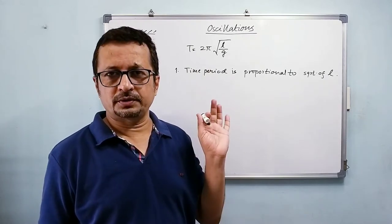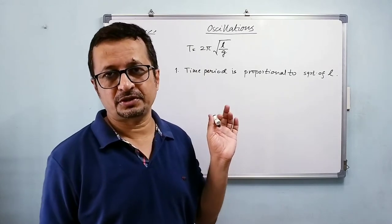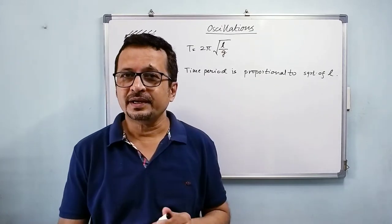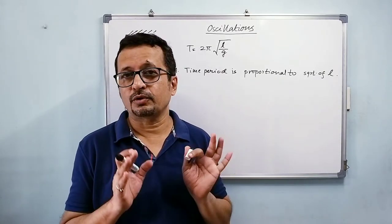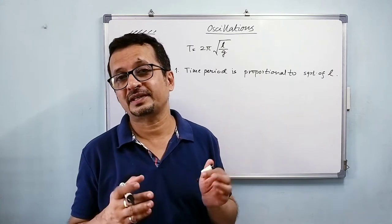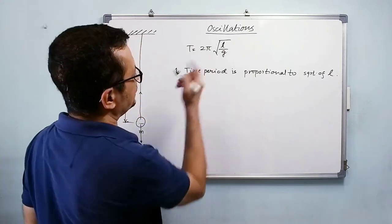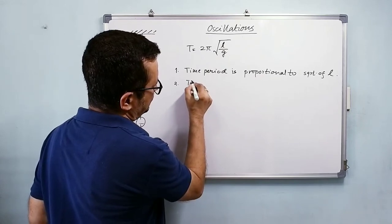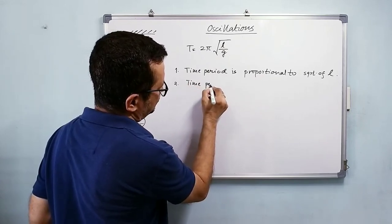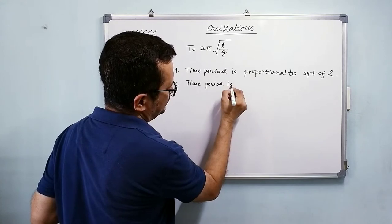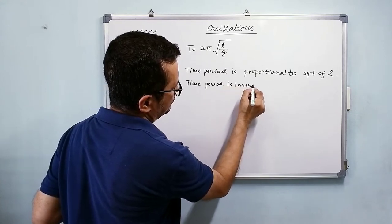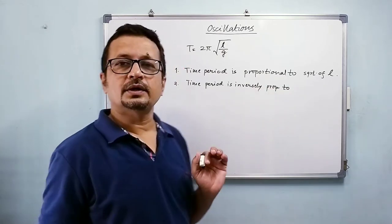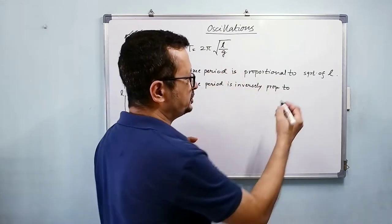You are going to get these notes in the blog, the link will be shared in the description. When I say proportional, it is directly proportional. If it is inversely proportional, then I will state that. Here the time period is inversely proportional to square root of g.